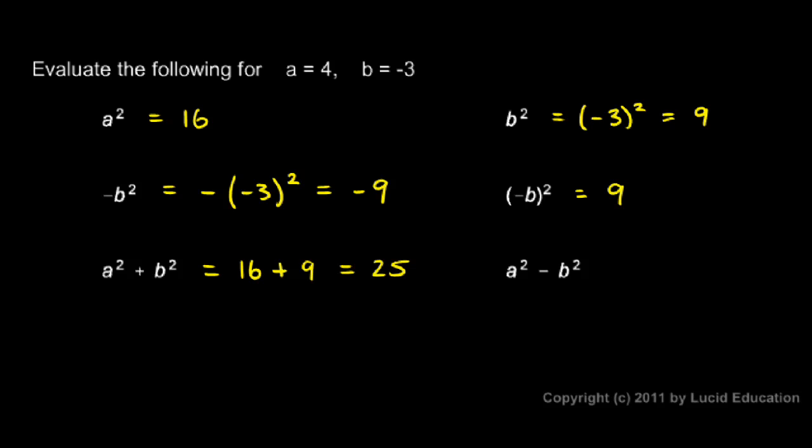And the last one: a squared minus b squared. Again, a squared is 4 squared, so that's 16. Then we have the minus, so minus b squared. b is negative 3, and negative 3 squared is positive 9, so I have 16 minus 9, which is 7.